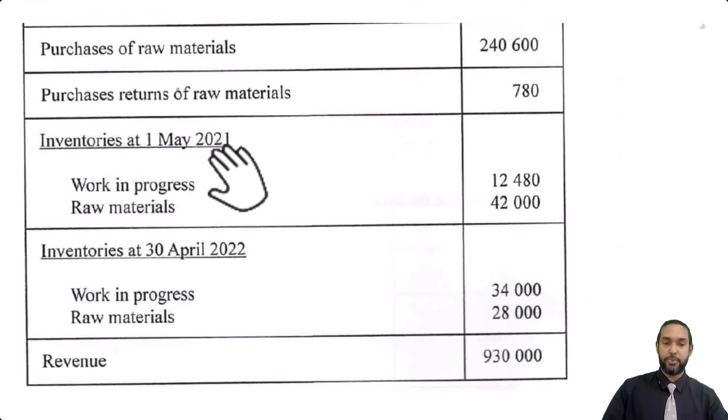Inventories at 1st May 2021, as we start the year. These are opening inventories. Work in progress, raw materials. Inventories at 30th April 2022. That's the end of the year. So these are closing inventories. Work in progress, raw materials. And we have revenue that might or might not be relevant.